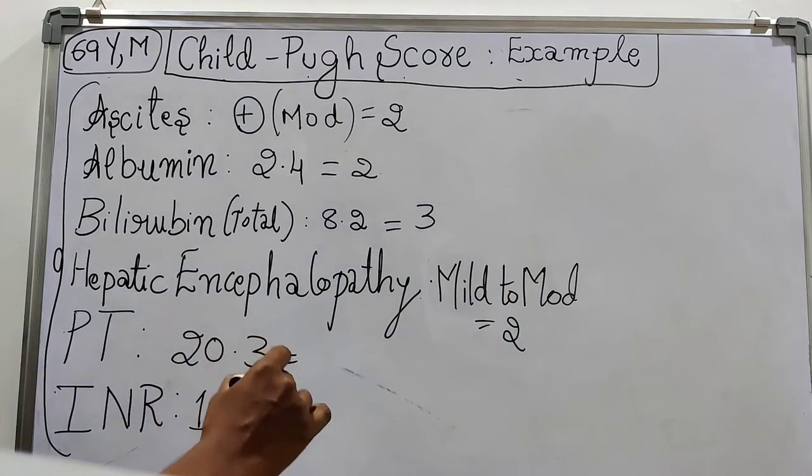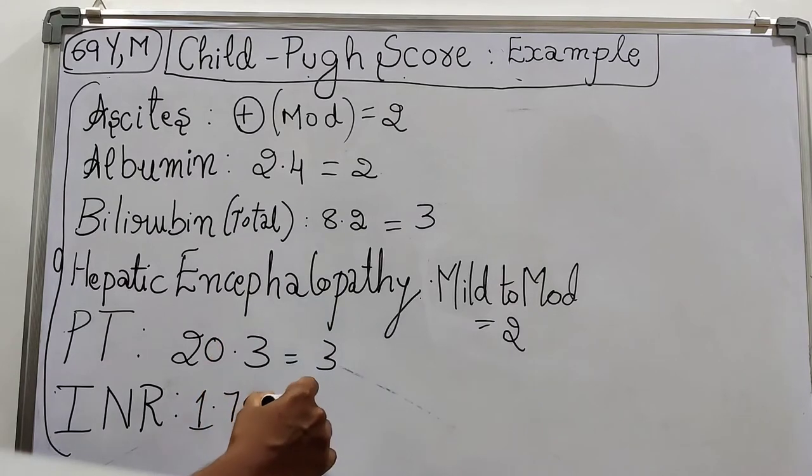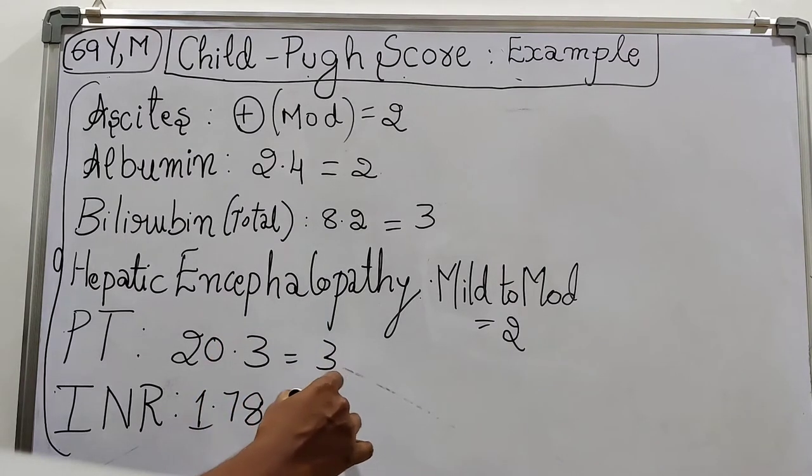Prothrombin time is 20.3, so score assigned will be 3. INR is 1.78, and score assigned will be 2.